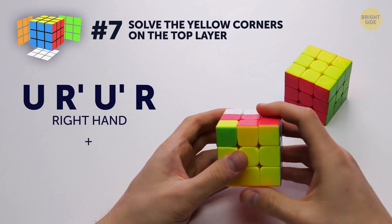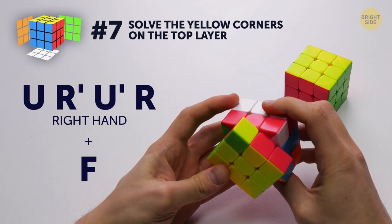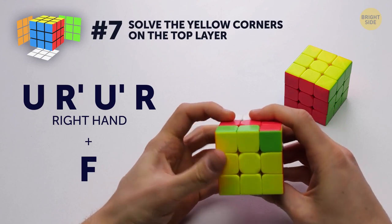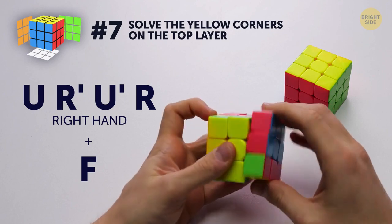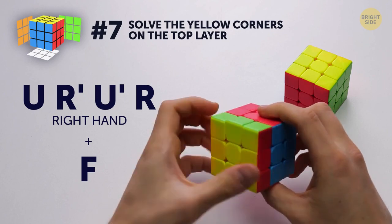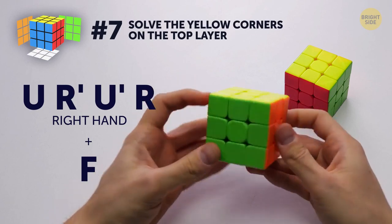move to the next by rotating the side that's facing you and using the same algorithm. Rotate the front layer so that all colors of the cube match, and you're done!